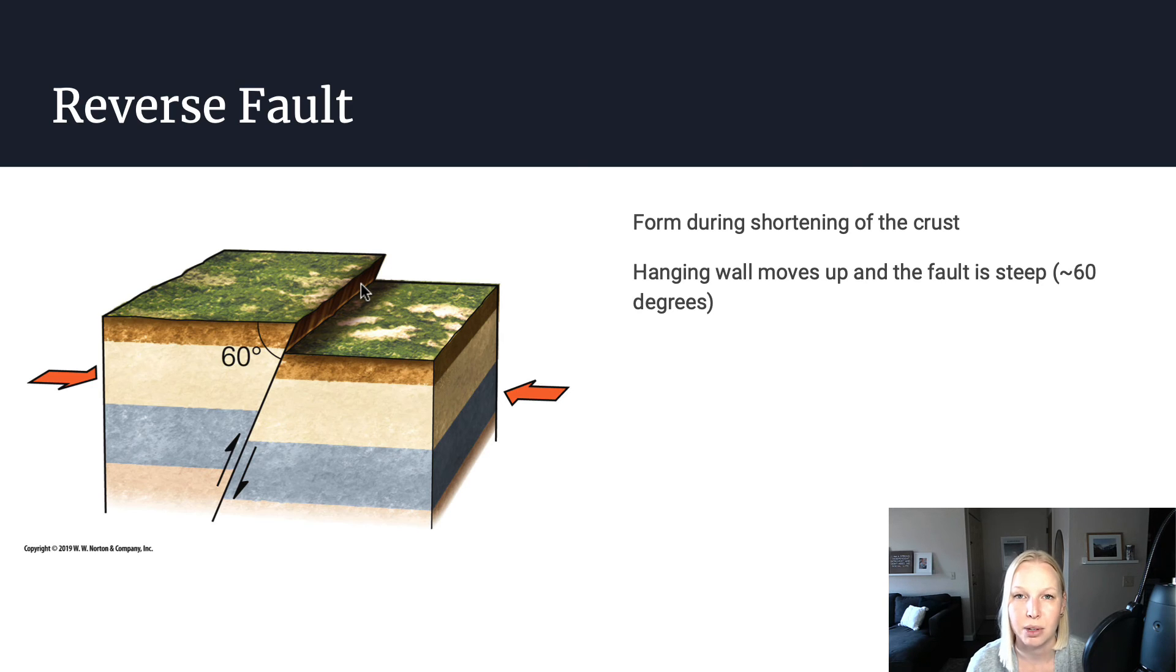And this is another example of a dip slip fault where one block is moving down relative to another. They're not moving side to side.